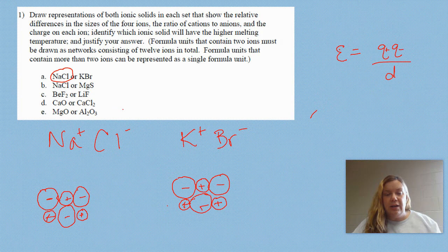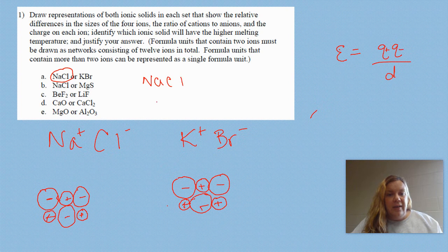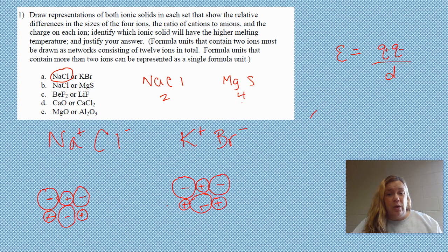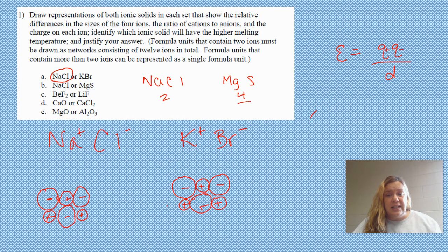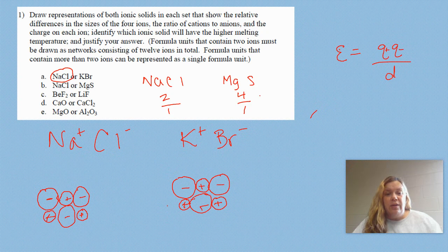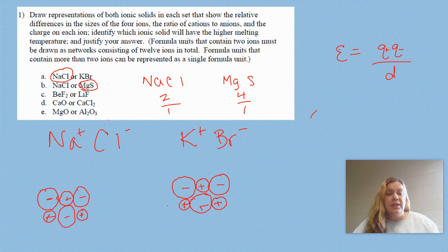Now I want to show part B with Coulomb's law in particular. For NaCl, we have a plus one and a minus one, so our Q is two. For MgS, we have a plus two and a minus two, so our Q is four. Our Q is larger for MgS and smaller for NaCl, and they're all in the same energy level. Since all these items are in the same energy level, the distance is the same — let's call the distance one. MgS is going to have a larger energy for Coulomb's law, so if the larger energy is going to take more to melt it, MgS is going to have a higher melting point.